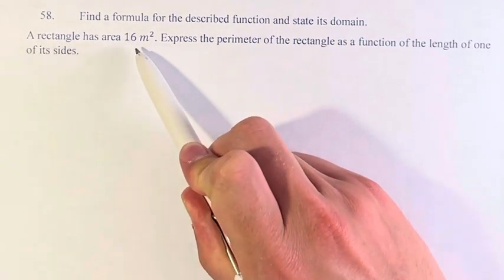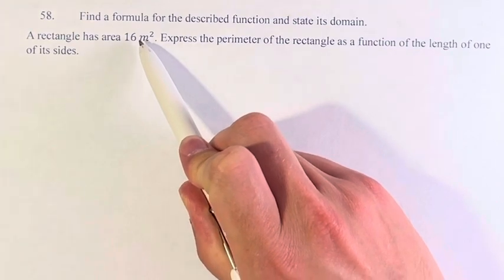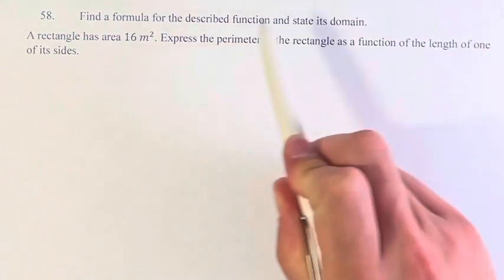In this case, a rectangle has an area of 16 meters squared. I'm looking to express the perimeter of the rectangle as a function of the length of one of the sides.